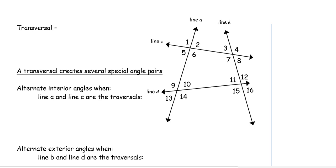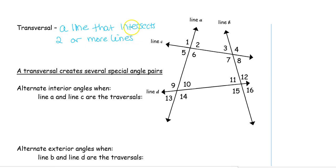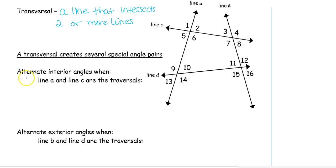Now let's talk about the heart of this chapter. There is a special line called a transversal. A transversal is a line that intersects two or more lines. Looking at our diagram, line A is a transversal because it cuts through C and D; line B cuts through C and D; line C cuts through A and B; and line D cuts through A and B as well. Any line cutting through two or more lines creates these special angle pairs.